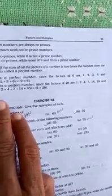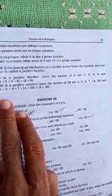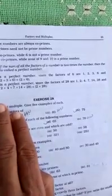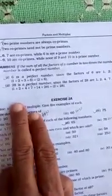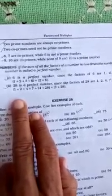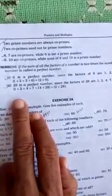What are the factors of 28? Factors of 28 are 1, 2, 4, 7, 14, 28 and 1 plus 2 plus 4 plus 7 plus 14 plus 28 is equal to 2 into 28.